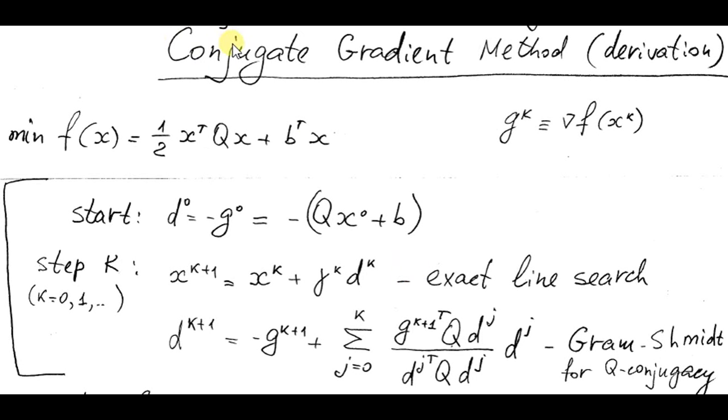Conjugate gradient method is a particular case of method of conjugate directions when the set of directions is built on base of gradients of objective function. Assume we need to minimize quadratic objective function, read it here.